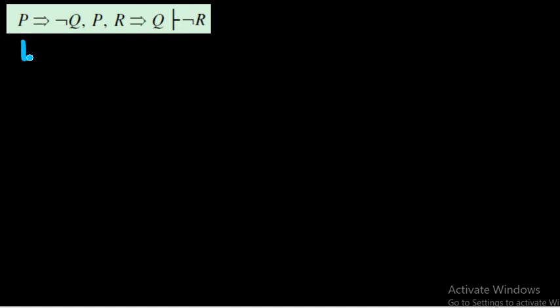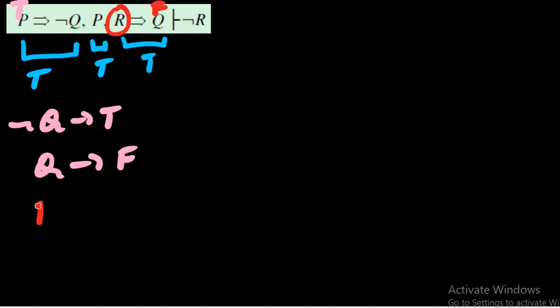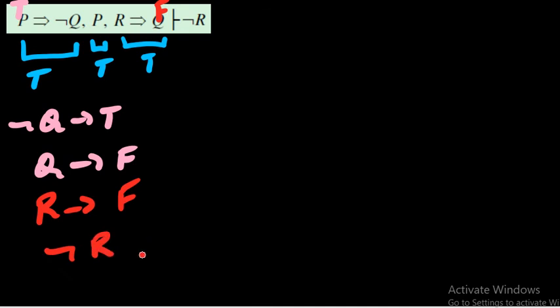The next example has three premises: p→¬q, p, and r→q, all taken as true. Since p is true, from p→¬q, ¬q must be true, meaning q is false. Going back: since q is false and r→q is a premise (true), r must be false — because true→false would be false, contradicting the premise. So r is false, meaning ¬r is true. The conclusion ¬r is true, so the argument is valid.